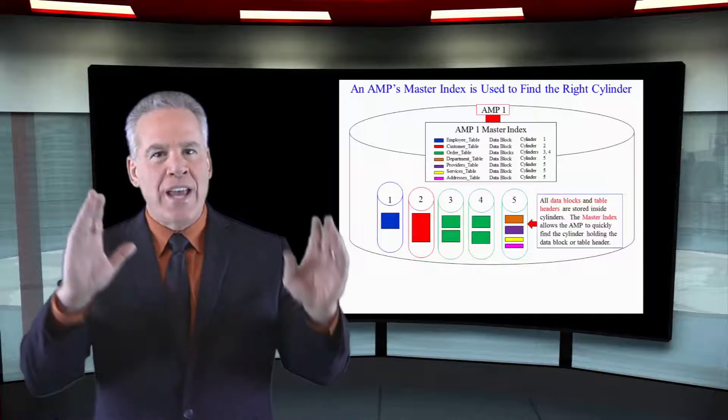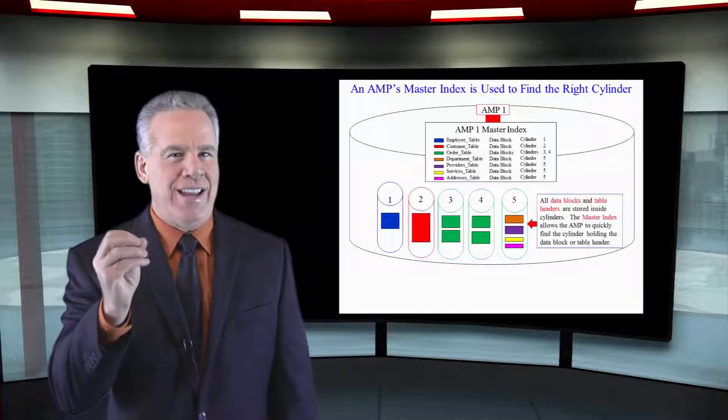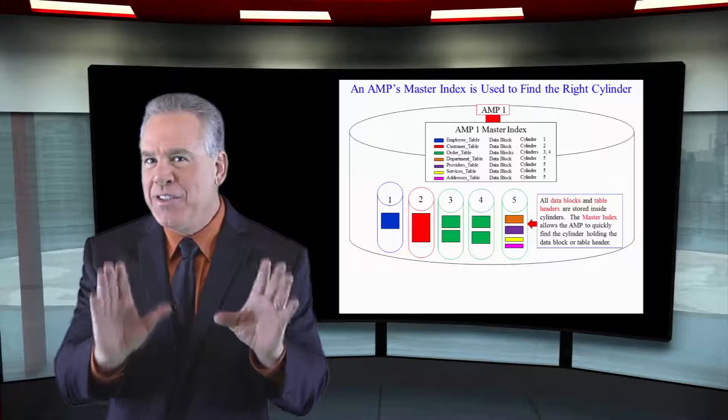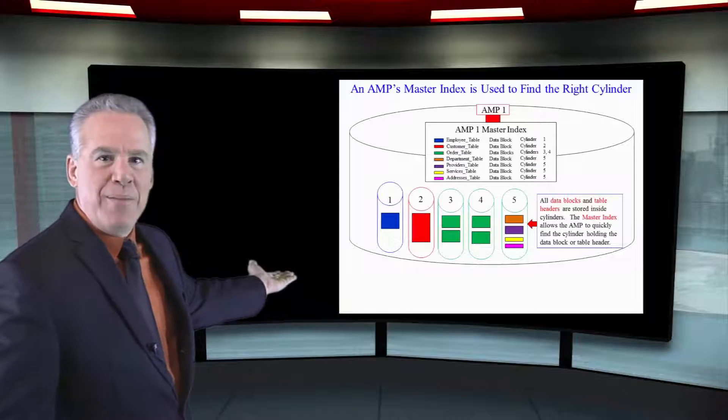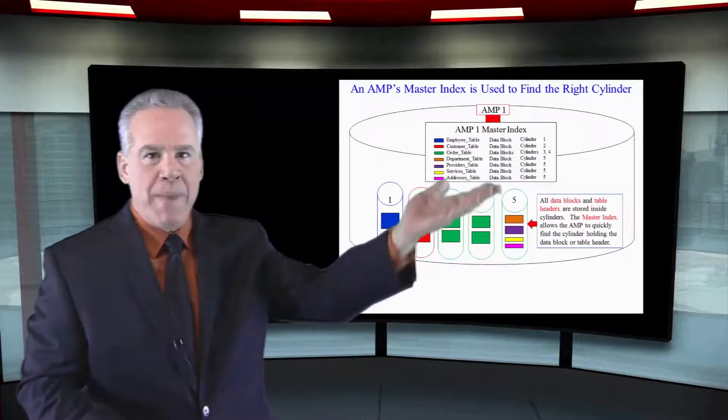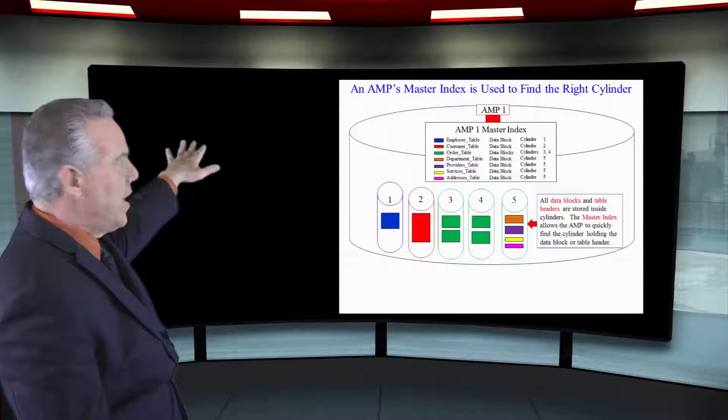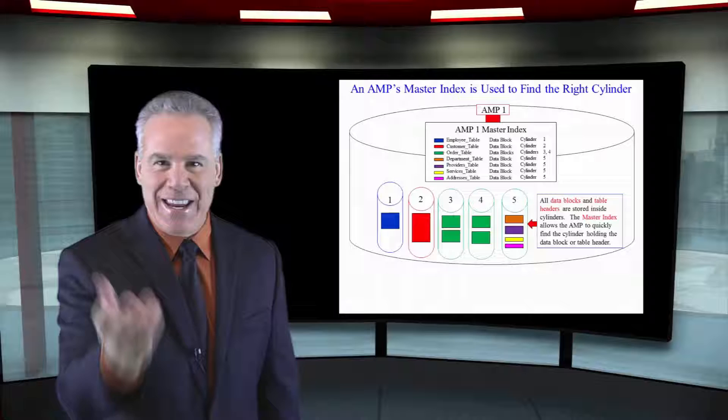Every amp always has in its memory its master index. What's the master index do? It tells the amp what cylinder a particular table and data block is. As you can see here, we've got the master index at the top. All the colors of the table are there to guide you. You can see down below, once the amp sees its master index, it knows on its disk exactly which cylinder it needs to read to retrieve that information.